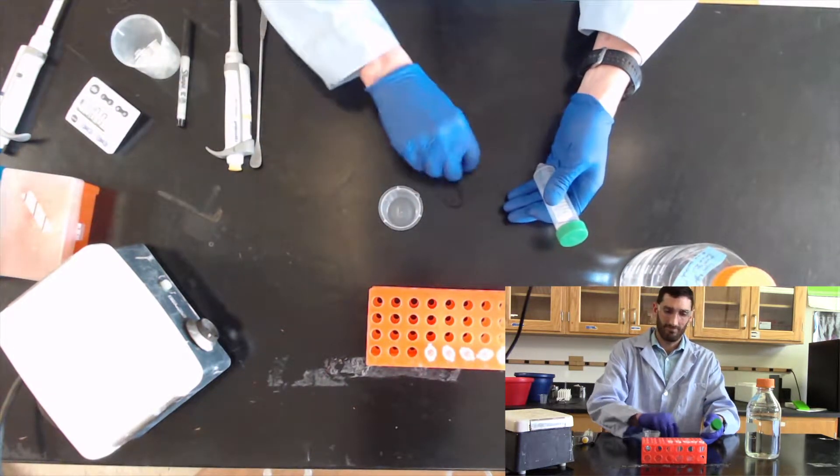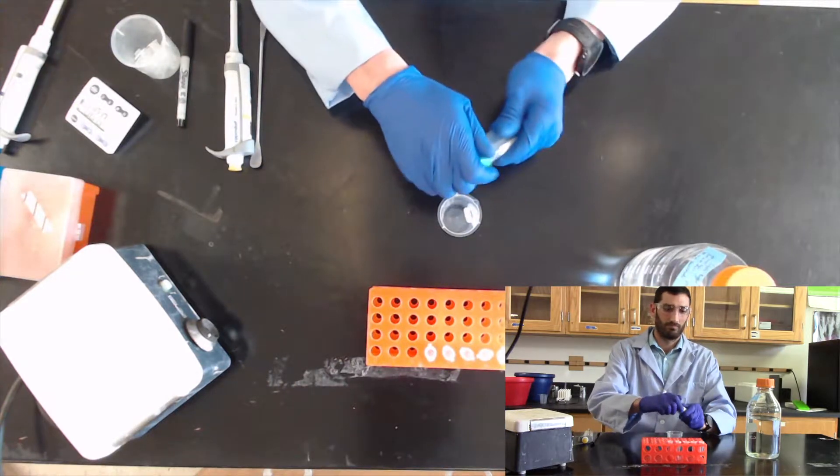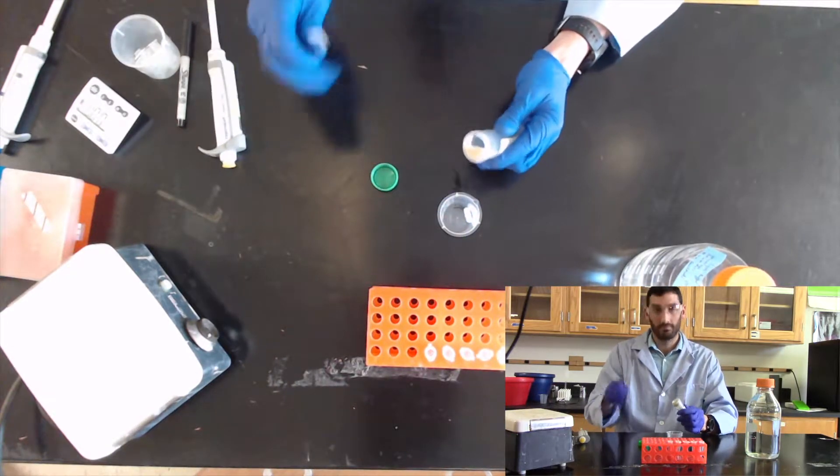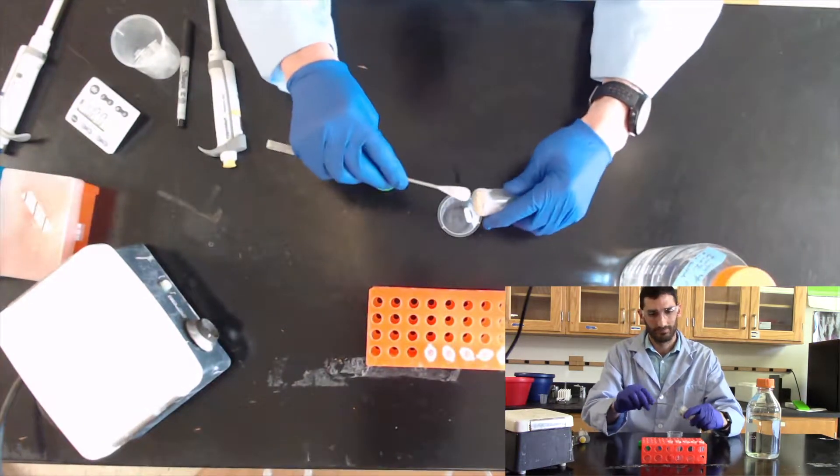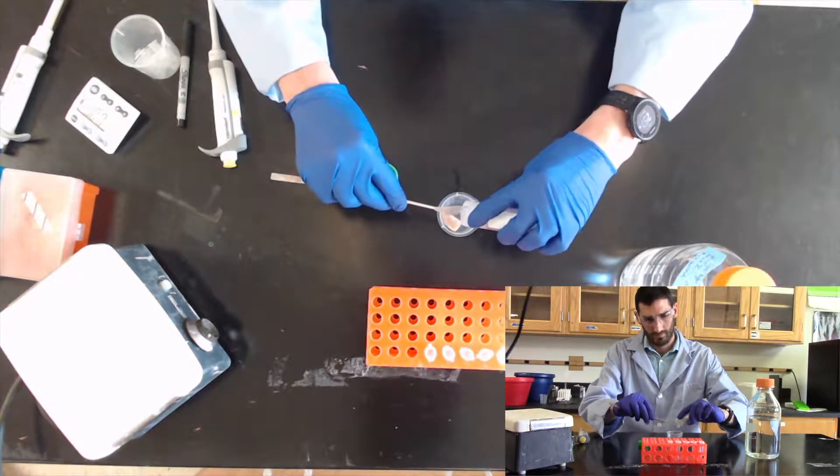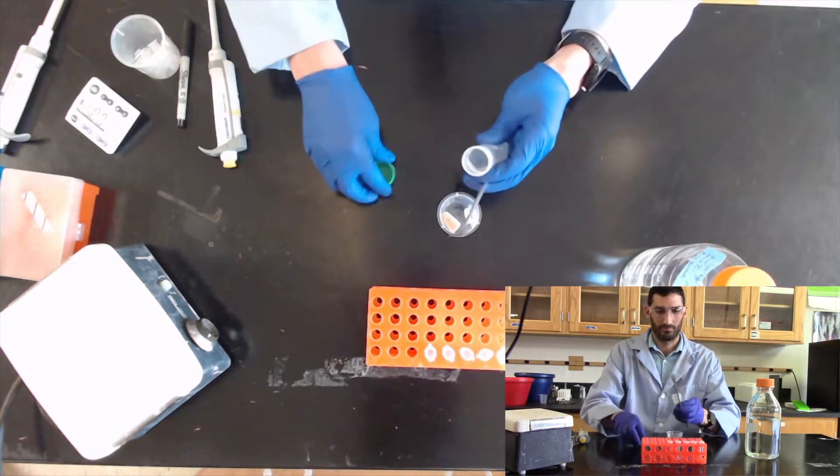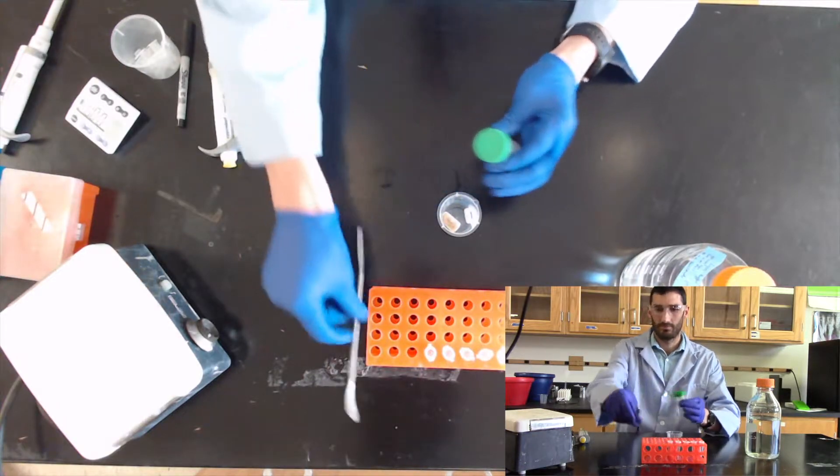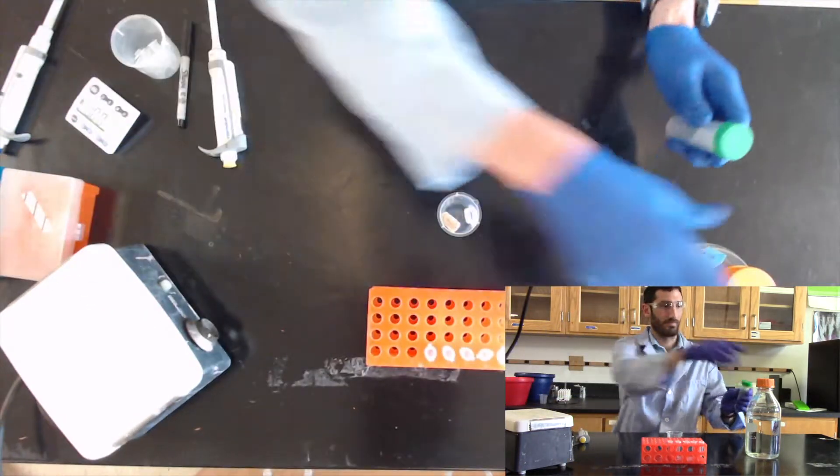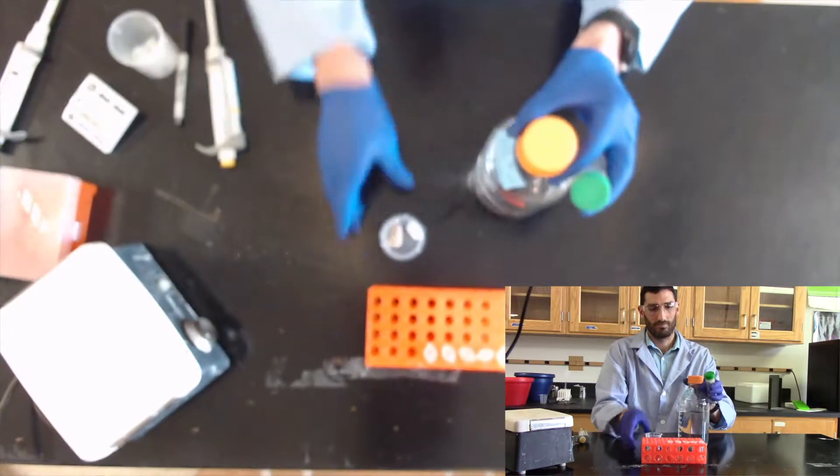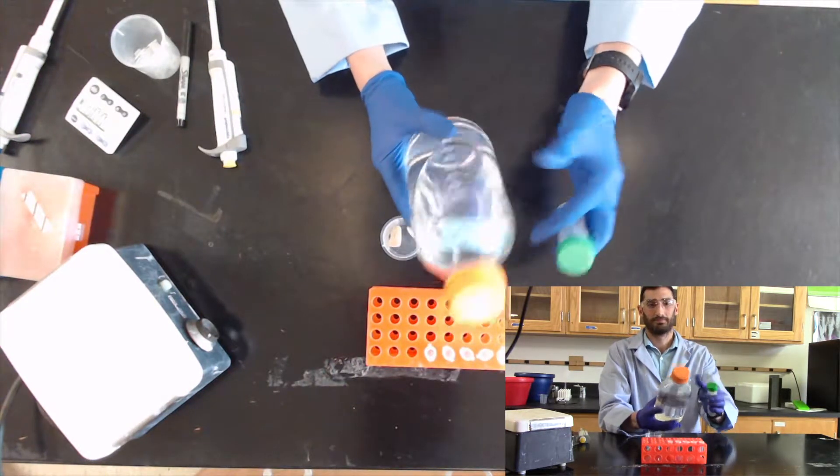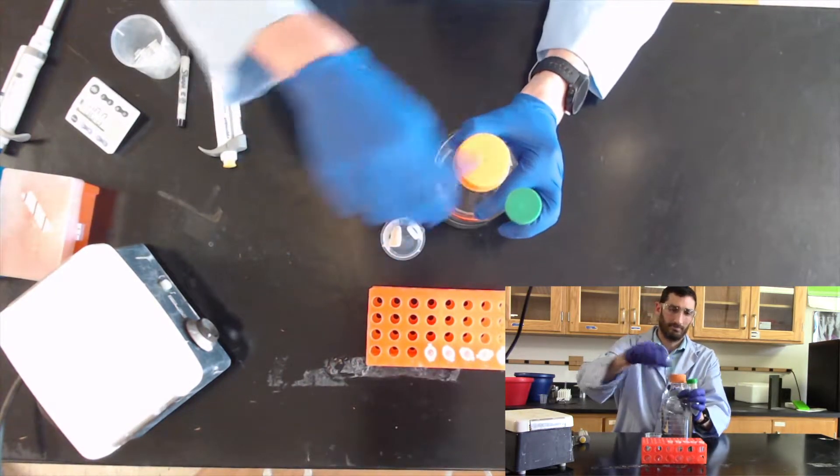To begin with, obtain your cell pellet. Transfer your thawed cell pellet to a beaker containing a stir bar. Measure out 5 to 10 times your cell weight in buffer A, which is your lysis buffer, and add it to your cell pellet.